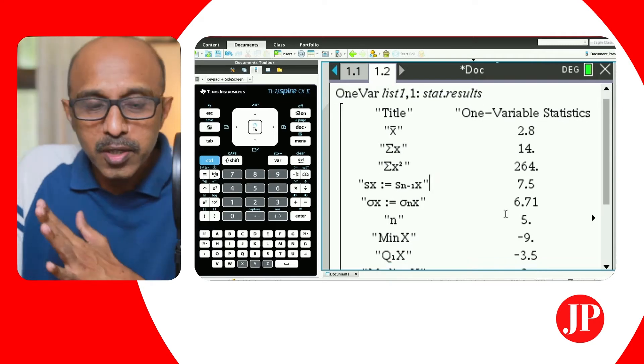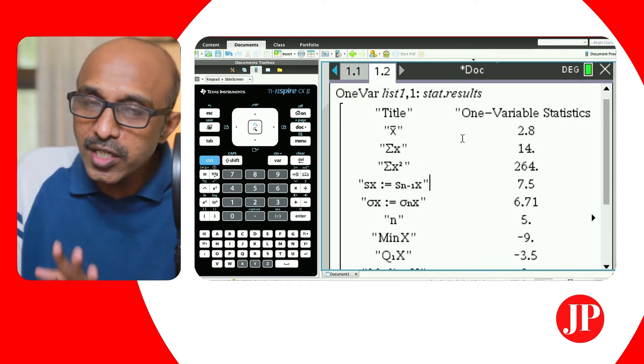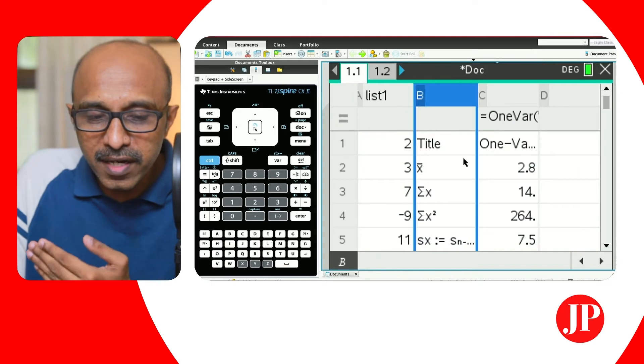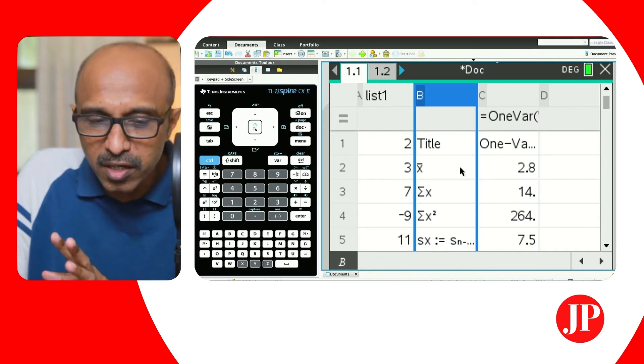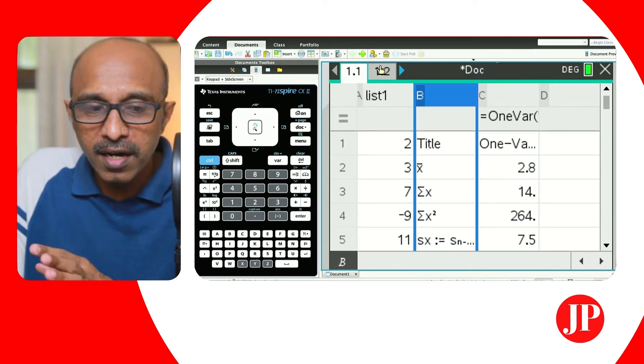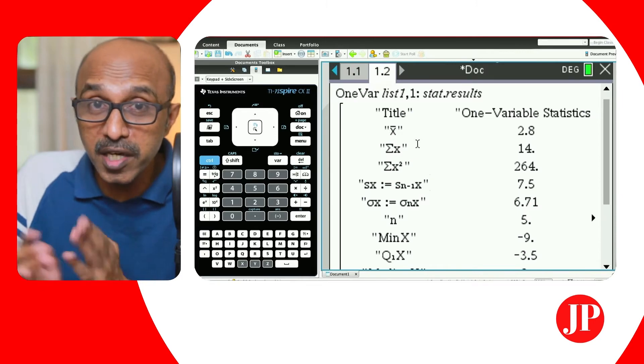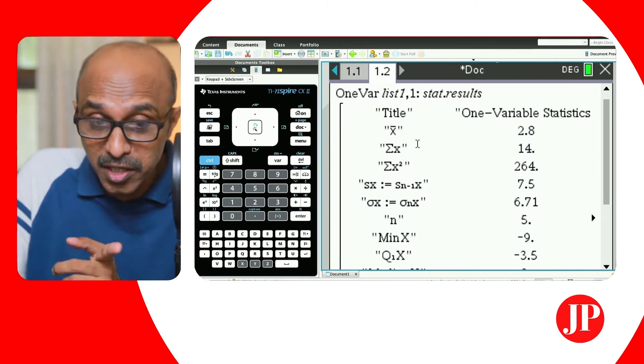And here you've got almost like a little table. It's all presented the same data. So you can perform the one variable statistics even on the calculator page. If you find it very difficult, or tedious to read through the list and spreadsheet page, you can do the same thing on the calculator page because they are dynamically linked as I showed you right now.